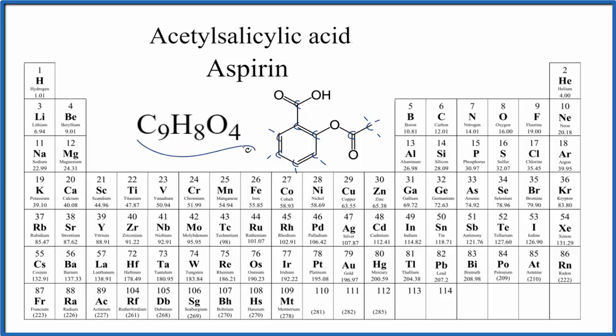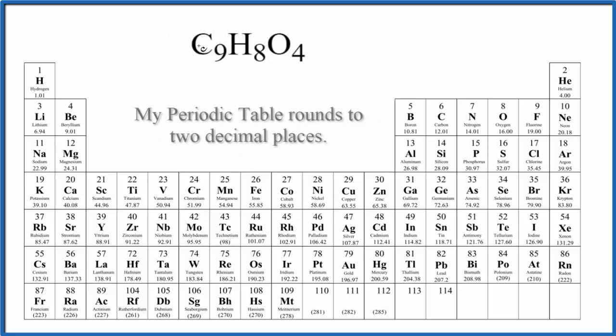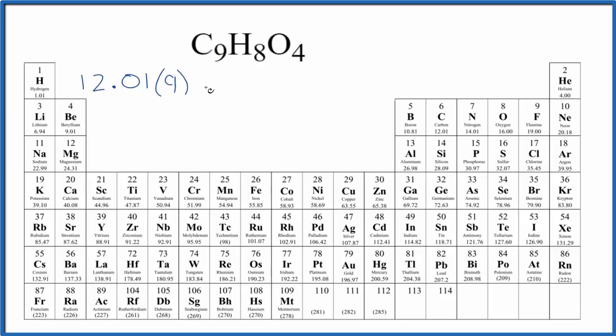So we use this formula here to find the molar mass for acetylsalicylic acid. We go to the periodic table, we find carbon right here, 12.01, and the units are grams per mole. I won't write that each time, let's write that at the end. We have nine carbon atoms, so we're going to multiply that by nine, plus hydrogen, we have 1.01 grams per mole. We have eight hydrogen atoms. Finally, oxygen, 16.00 grams per mole, and we have four oxygen atoms.